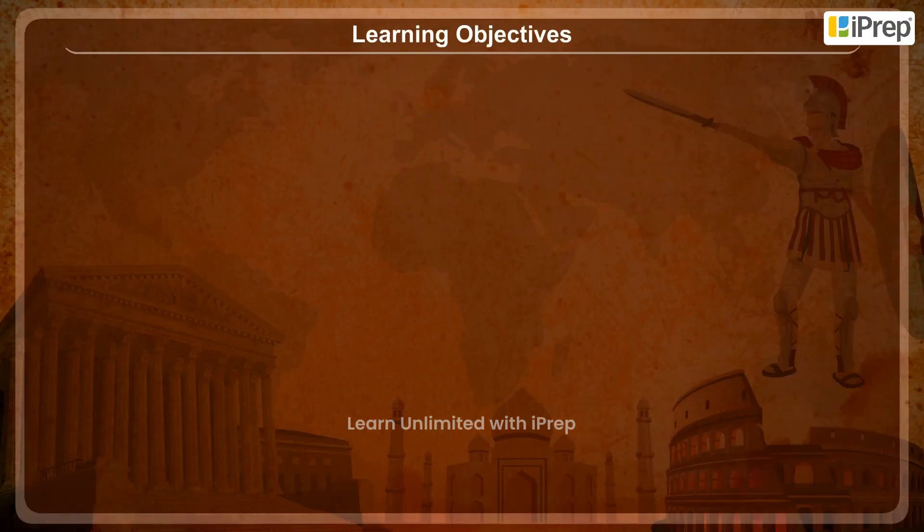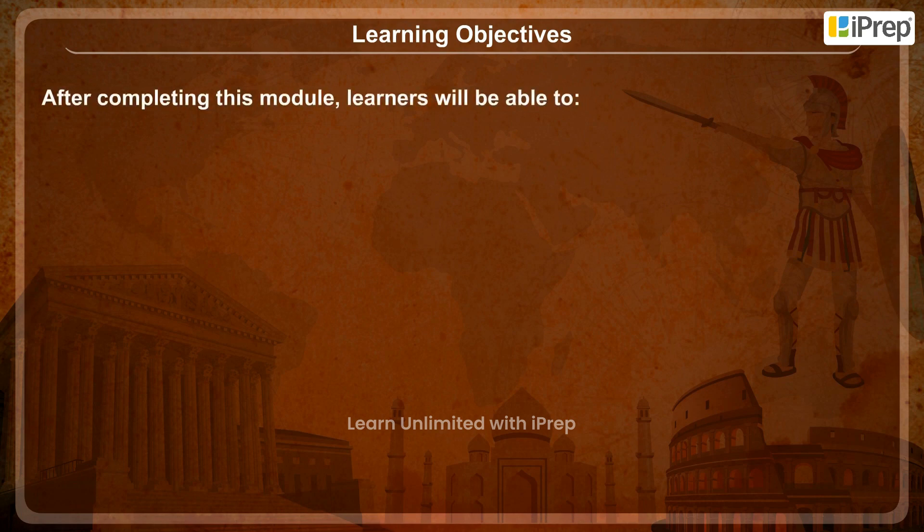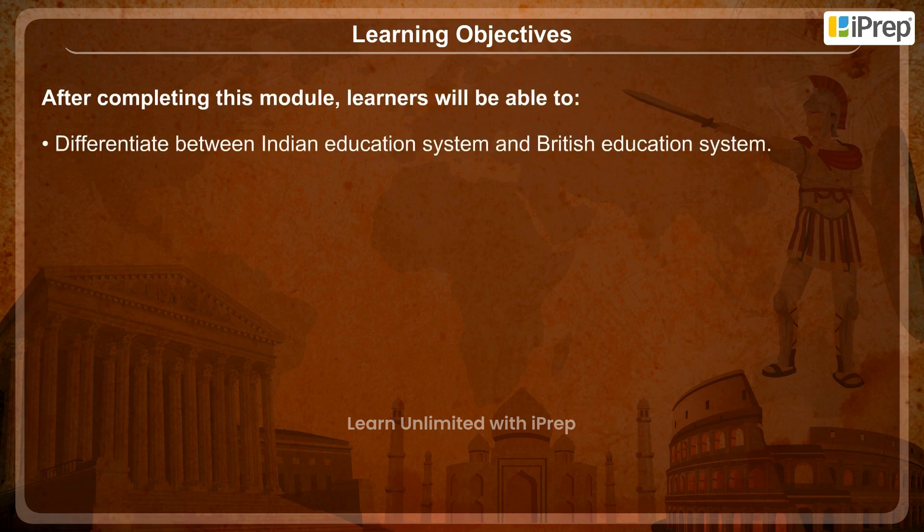Learning Objectives. After completing this module, learners will be able to: differentiate between the Indian education system and the British education system, and recall the report of William Adam.